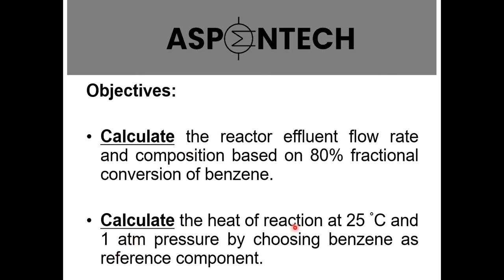You have to first calculate the heat of reaction at 25 degrees Celsius and 1 atm pressure by choosing benzene as the reference component. So we have to do two tasks: number 1 is to calculate flow rate and composition, and number 2 is to calculate the heat of reaction at 25 degrees Celsius and 1 atm.